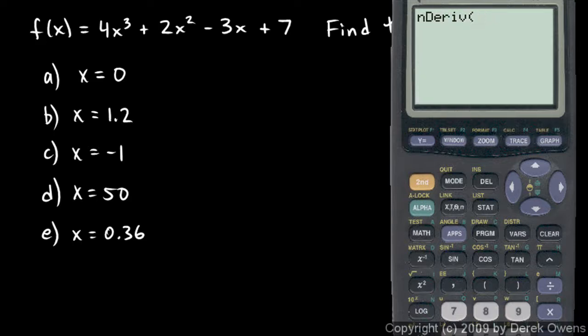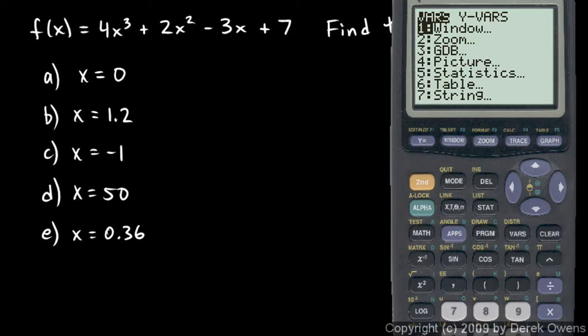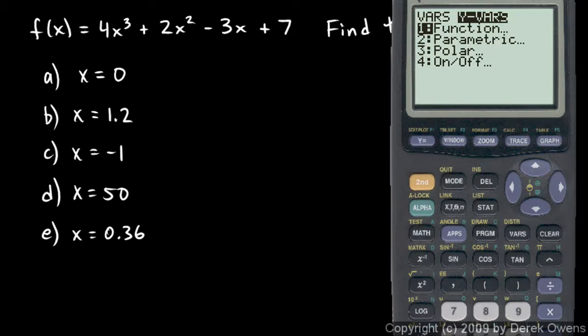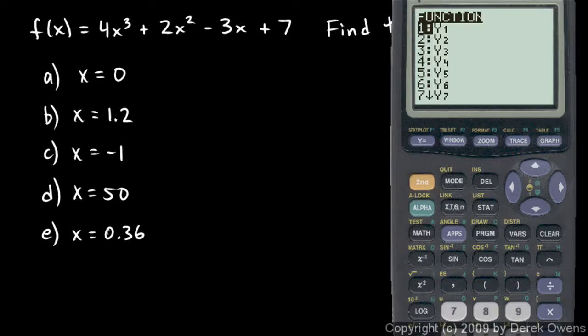And to get to y1, I hit the vars key right here, and I get this list up. And now look up at the top where it says vars and yvars, go over to the right, use your arrow key and go to the right, and then option 1 is function. You can just press option 1 there or hit enter. And function, you see my list of functions there, y1, so just press 1 again. And it types y1.